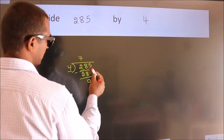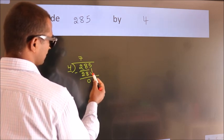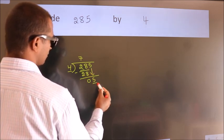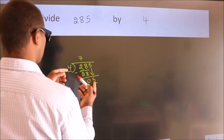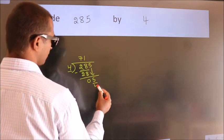After this, bring down the beside number. So 5 down. So 5. A number close to 5 in the 4 table is 4 times 1, which is 4.